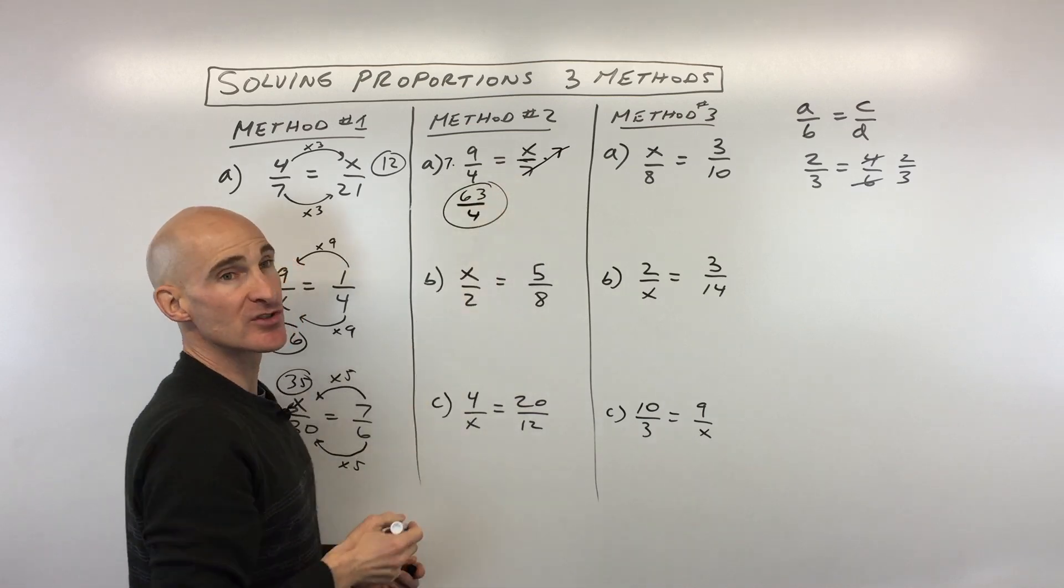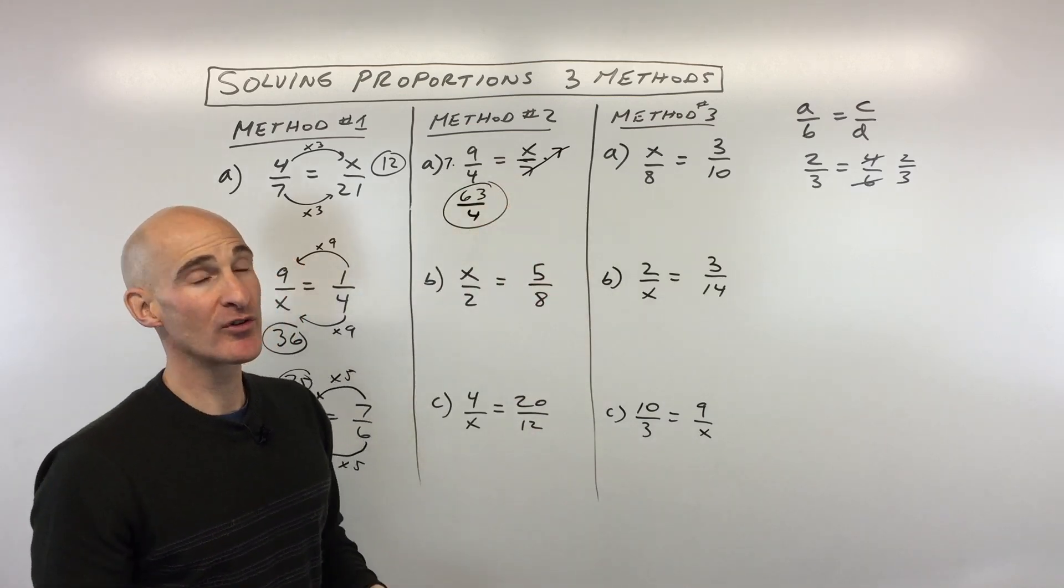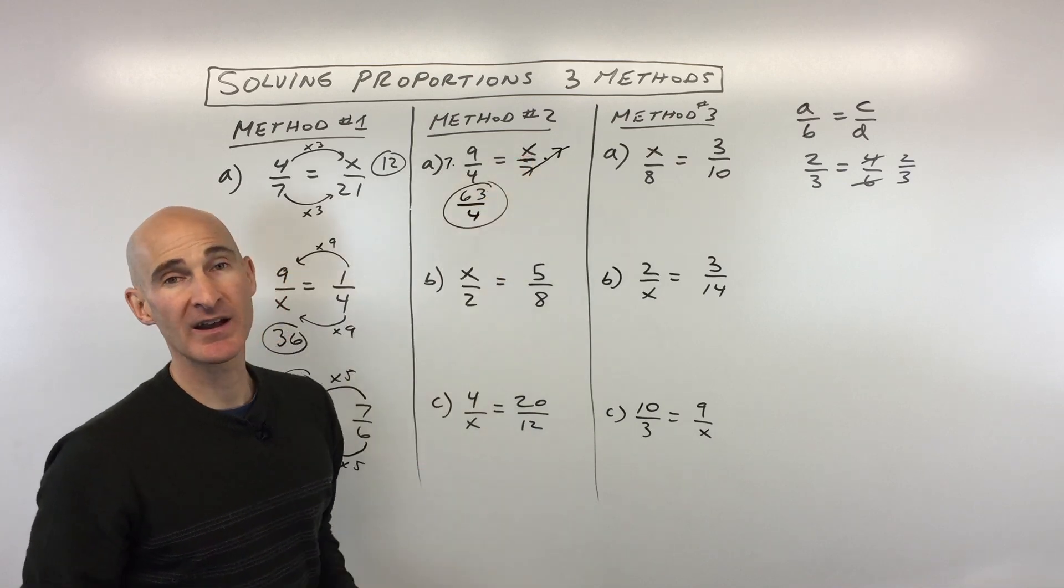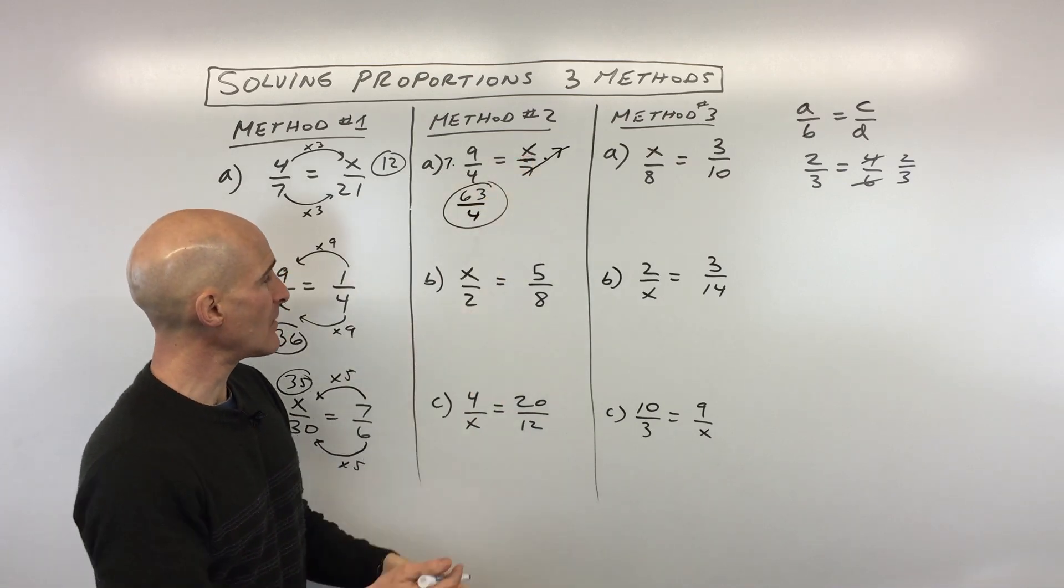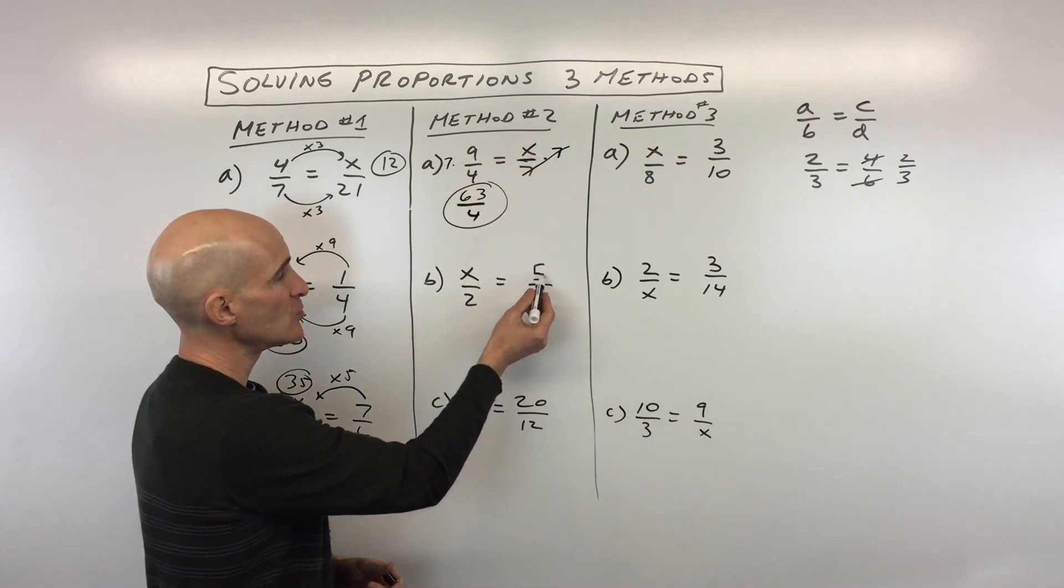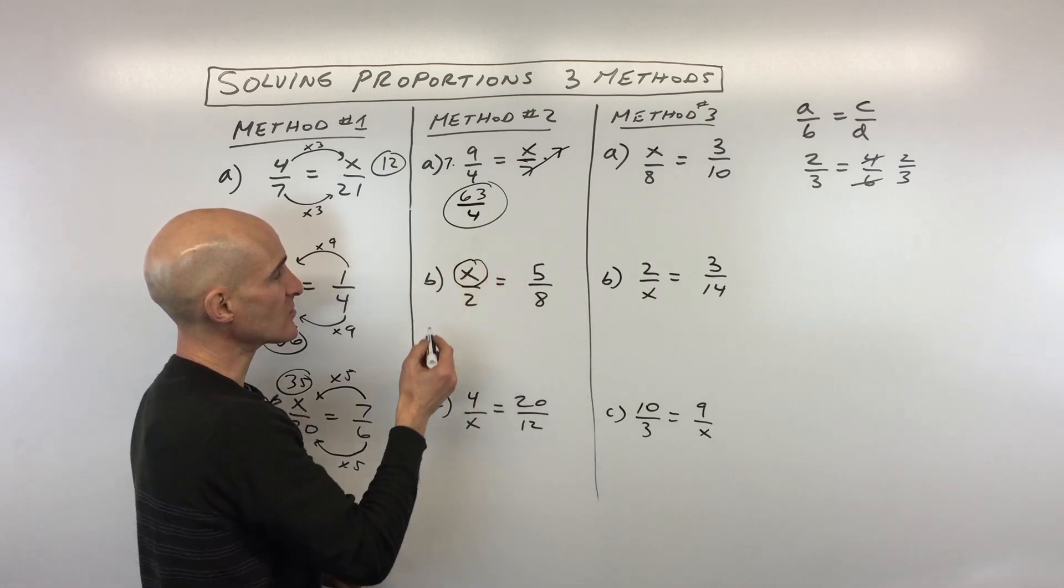And that's our final result. So that's what x is, it didn't come out to a super nice number. But again, our goal is to find out the unknown. Okay, let's look at example B here. So x divided by 2 equals 5 divided by 8, our goal is to find out what this x is.